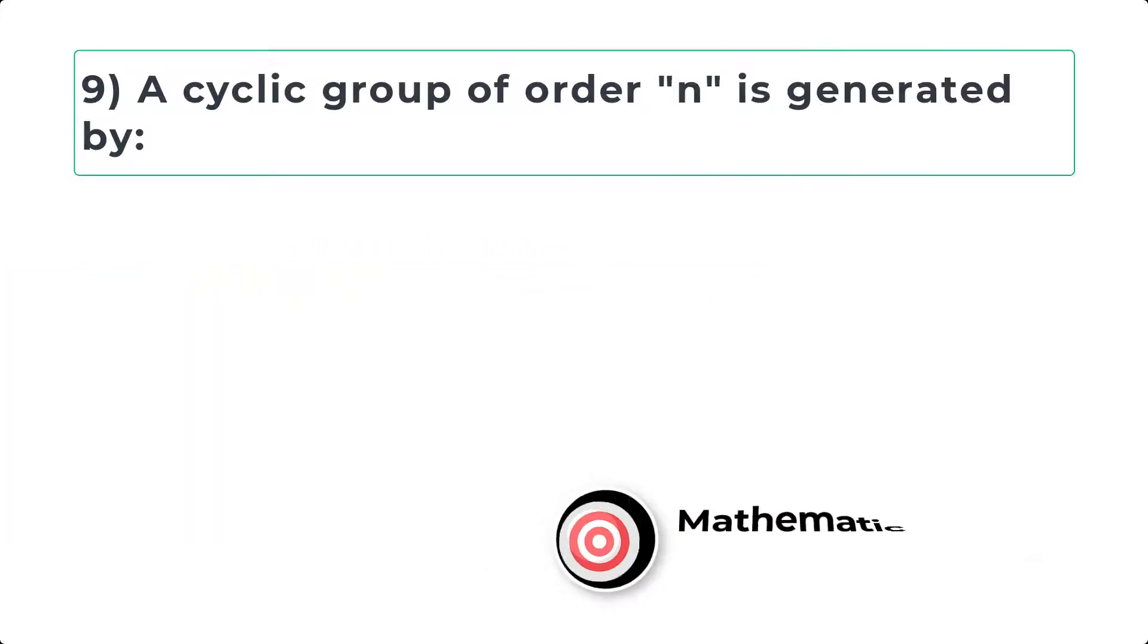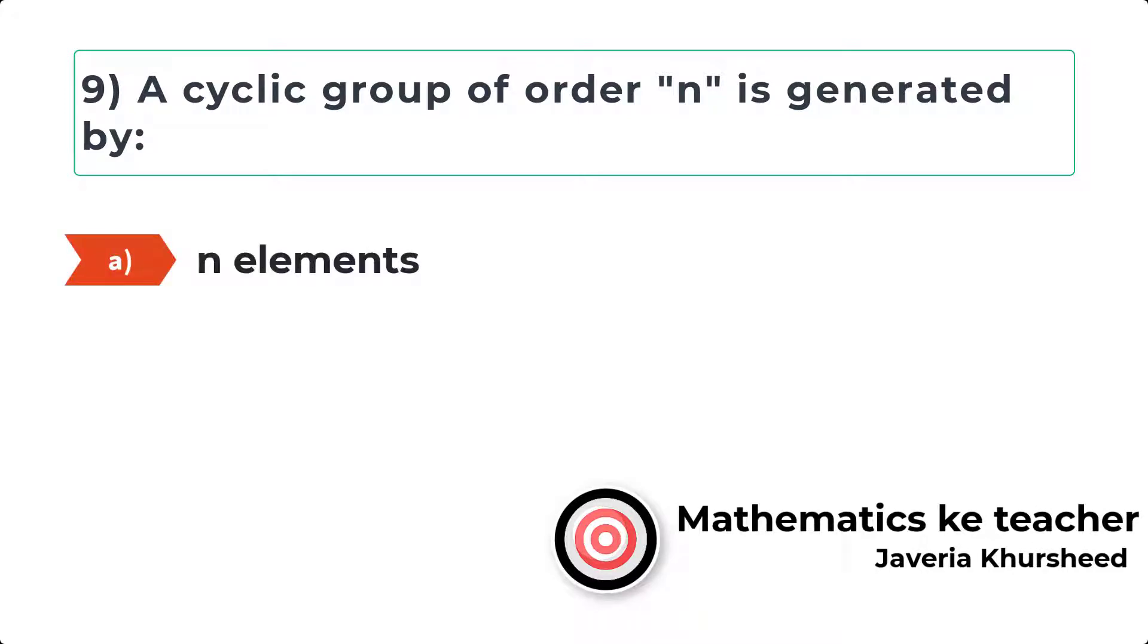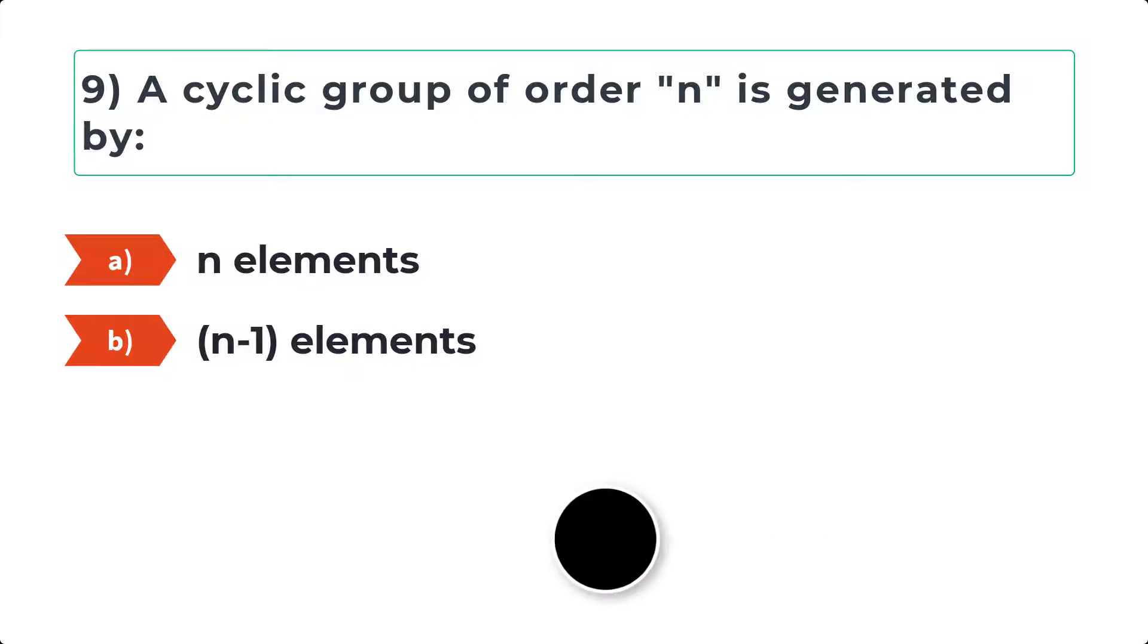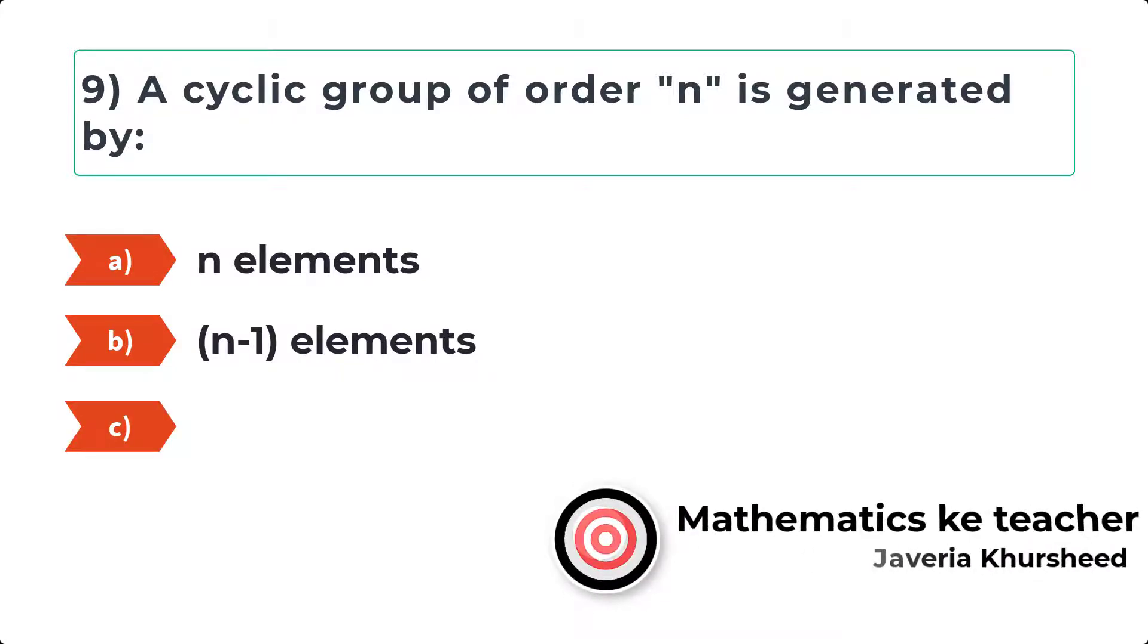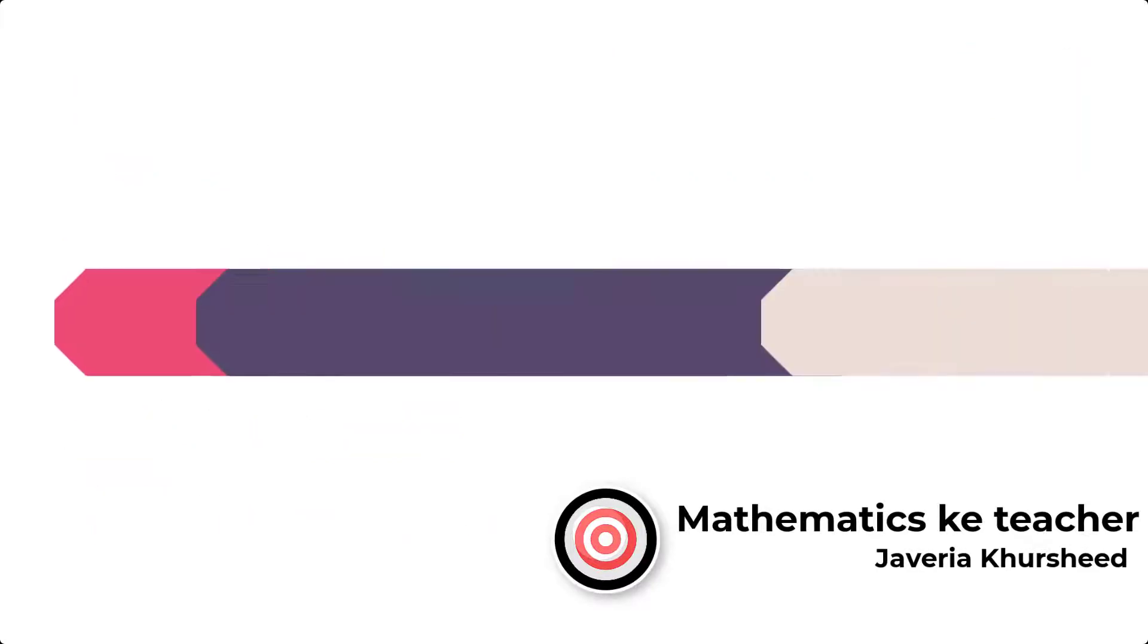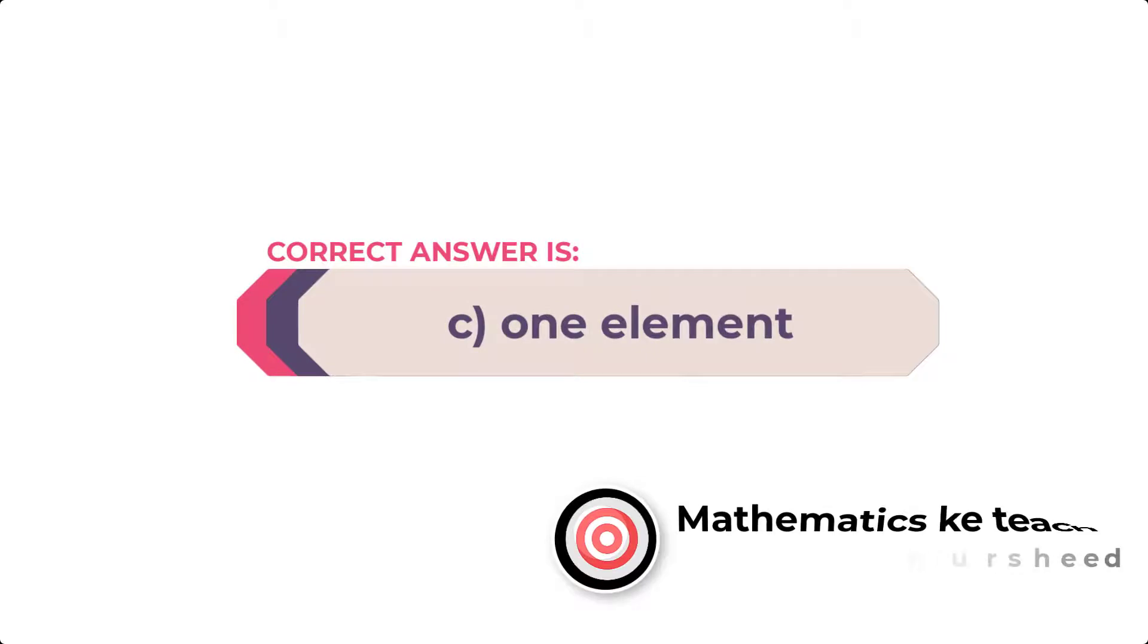Question 9: A cyclic group of order n is generated by: A, n elements; B, n minus 1 elements; C, 1 element; D, 2 elements. Correct answer is C, 1 element.